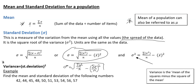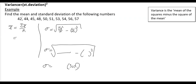Now let's look at an example. We'll apply this first without using the calculator, then with the calculator. We need to find the mean and standard deviation of: 42, 44, 45, 48, 50, 51, 53, 54, 56, and 57. Using x̄ = Σx/n, if you add up all those values you get 500. We have 10 numbers, so the mean is 500/10 = 50.